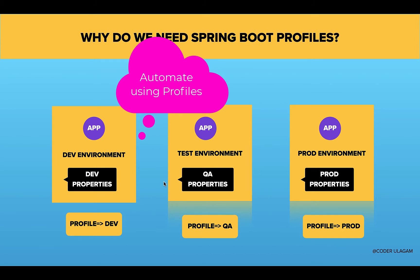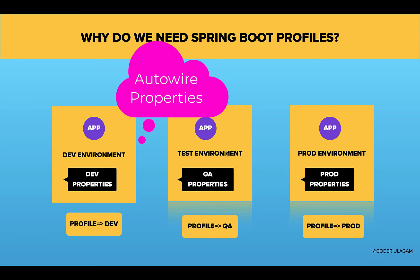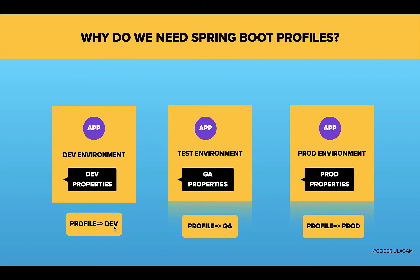Spring Boot provides a default option: you can use Spring Profiles. With Spring Profiles, the properties file will automatically be used. If you have dev properties, you configure them; if you have QA properties, you set the profile to QA. Whatever profile you specify, the corresponding properties file is loaded and the values are used in the application.